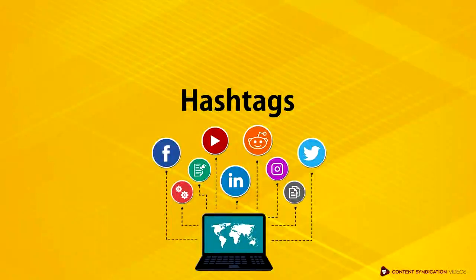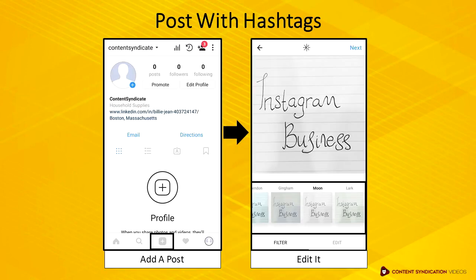Finally, it's time for you to create a post by adding both caption and hashtags. All you need to do is click the plus button on the bottom center of the screen. Choose your desired content and begin by filtering your picture. There's no right or wrong way to editing and filtering an image. Once you find one suitable for your post, click Next.